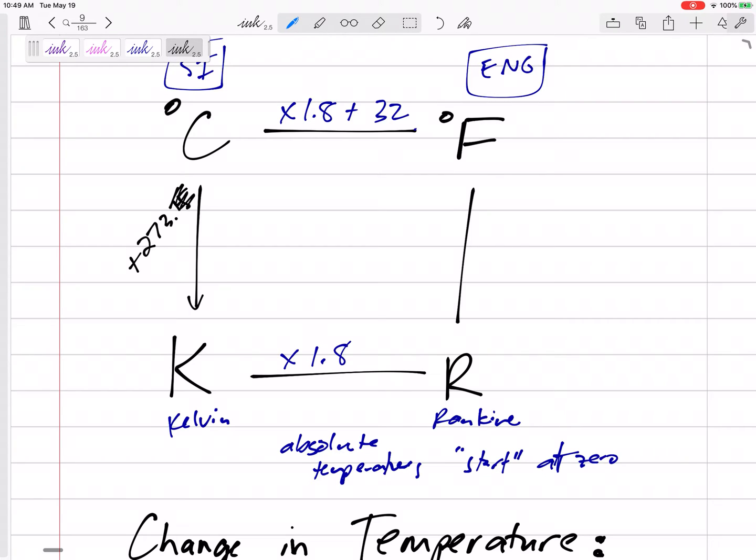But technically 273.15. To go from Fahrenheit to Rankin add 459.67 - many times I'm just going to add 460. But these right here, converting from Celsius to Kelvin or Fahrenheit to Rankin, we're adding 273 or adding 460.